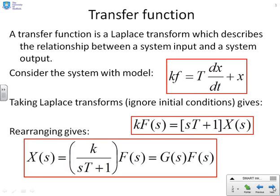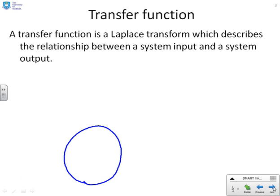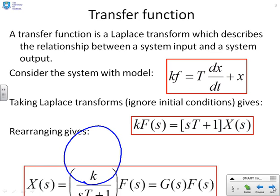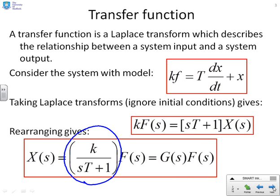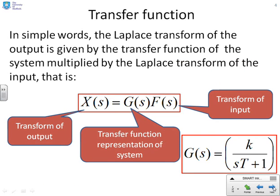If I rearrange this, I get X(s) equals k over (s·tau + 1) times F(s). The key part — k over (s·tau + 1) — represents the transfer function of the system, which I'll call G(s). X(s) is the Laplace transform of the output, F(s) is the Laplace transform of the input. So: the transform of the output, X(s), equals the transfer function G(s) multiplied by the transform of the input, and for this example G(s) = k over (s·tau + 1).